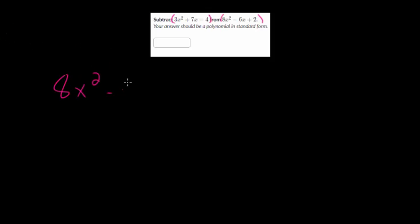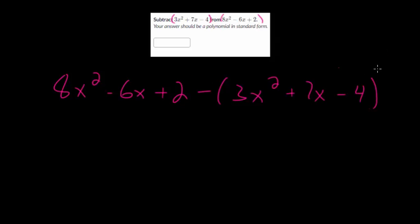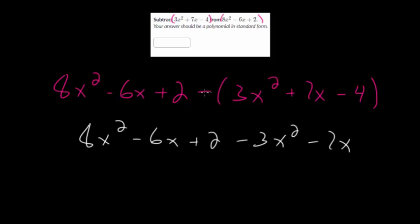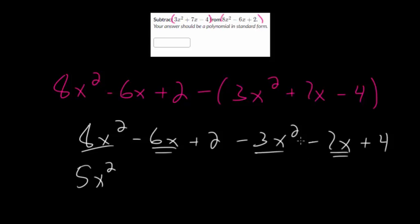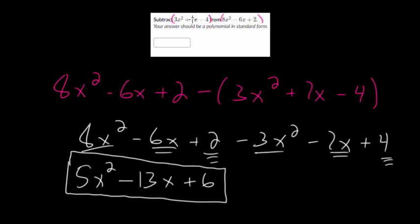We have another subtraction problem. We're going to subtract the polynomial 3x squared plus 7x minus 4 from 8x squared minus 6x plus 2. We have 8x squared minus 6x plus 2, and we're subtracting the first polynomial, so we put it in parentheses: 3x squared plus 7x minus 4. Distributing the negative to everything gives 8x squared minus 6x plus 2 minus 3x squared minus 7x, and minus negative 4 becomes plus 4. Combining like terms: 8x squared minus 3x squared is 5x squared. Minus 6x minus 7x is negative 13x. And plus 2 plus 4 is plus 6. So 5x squared minus 13x plus 6 is the final answer.